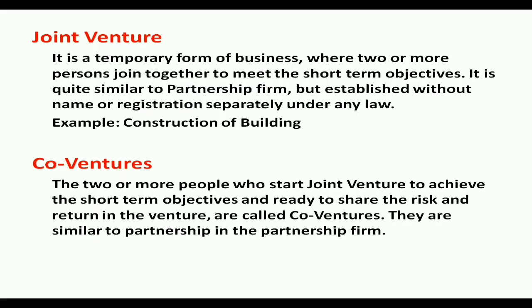Now let us start with the meaning. Joint venture is a temporary form of business where two or more persons join together to meet short-term objectives. It is quite similar to a partnership firm but established without a name or separate registration under any law. Example: construction of a building. Under this, two or more persons join together, start a business as joint venture for a short-term objective, share profit or loss based on agreement, or equally if no agreement exists, and operate without a business name or registration.